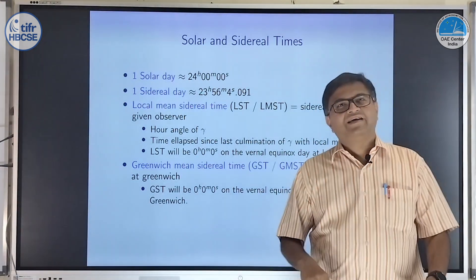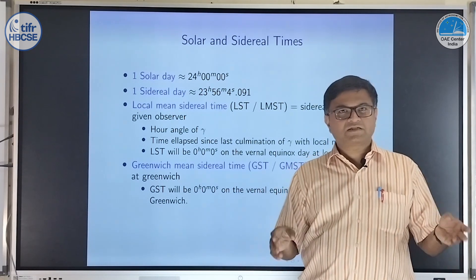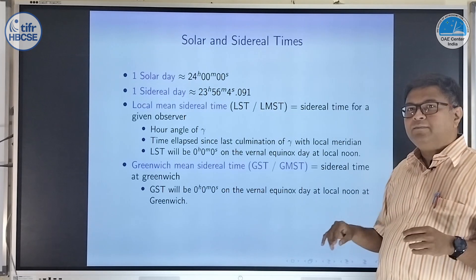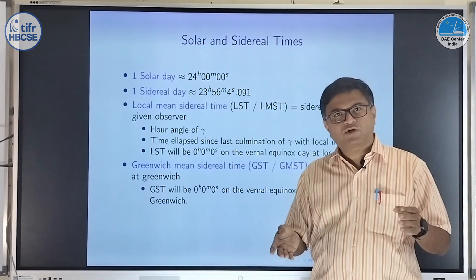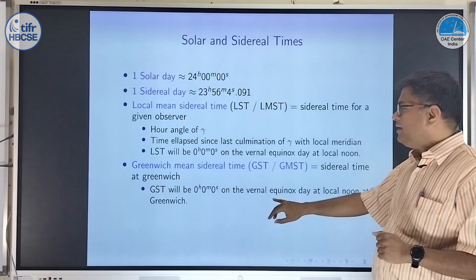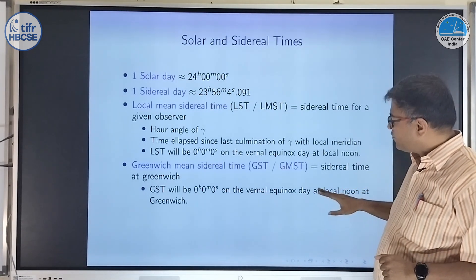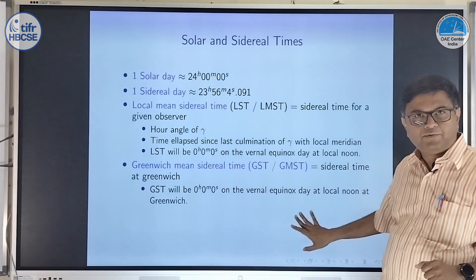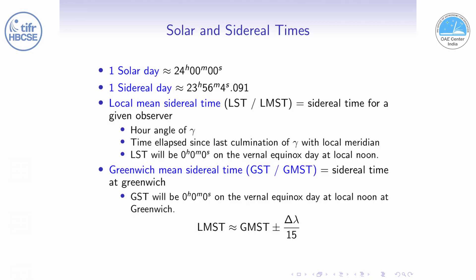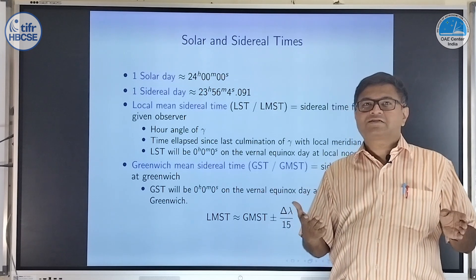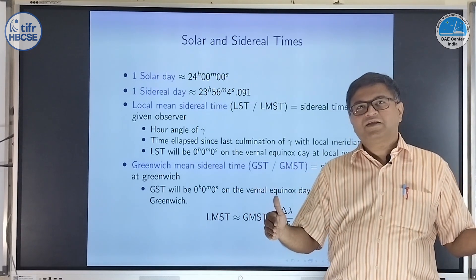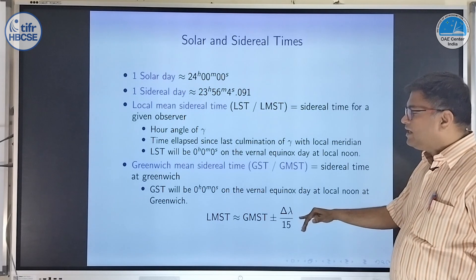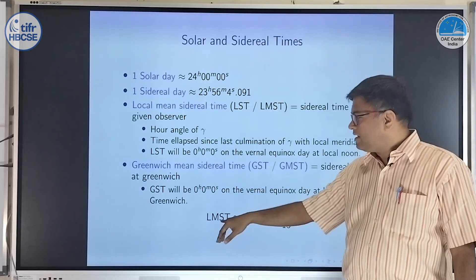We can also define Greenwich Mean Sidereal Time, GST, which is sidereal time at Greenwich — our reference meridian for Earth. Greenwich Mean Sidereal Time will also be zero at local noon at Greenwich on vernal equinox day. To convert between LST and GST, you just find the difference between the longitudes of the observer and Greenwich, divide by 15, and those many hours will be the difference. For example, Mumbai is 73 degrees east, so the difference is 73 divided by 15 hours.